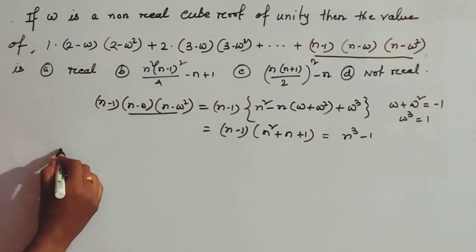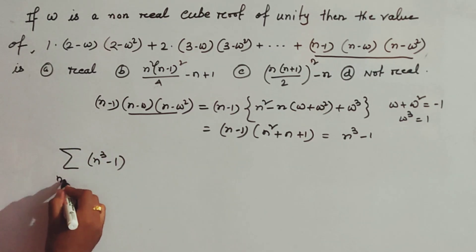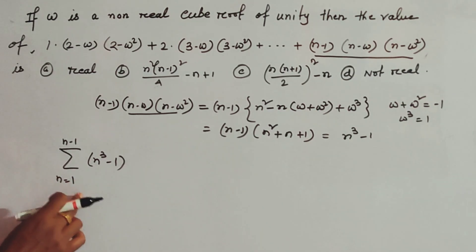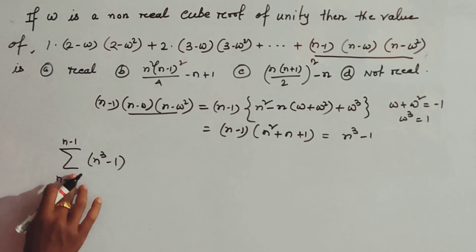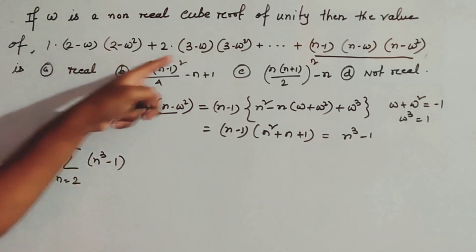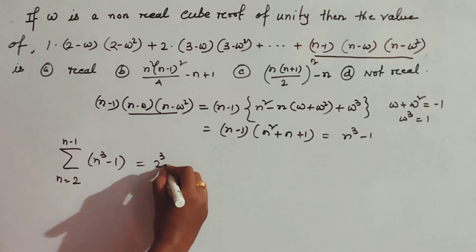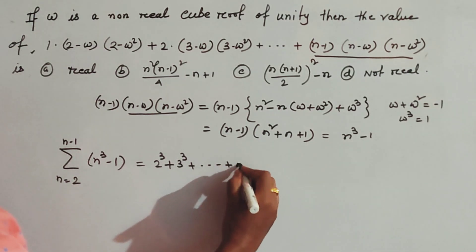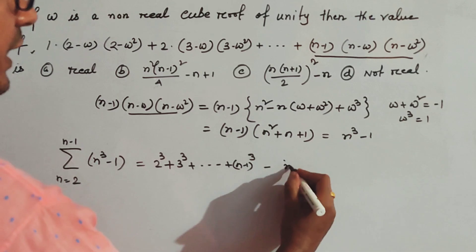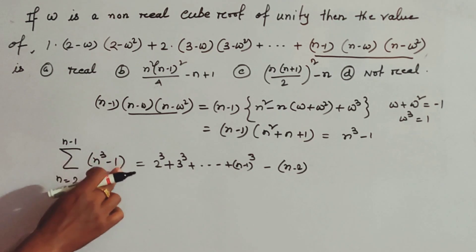Now the entire series is the summation of (n³ − 1) where n goes from 2 to n−1. The sum becomes 2³ + 3³ + ... + (n−1)³ minus (n−2), because there are n−2 terms and each term contributes a −1.